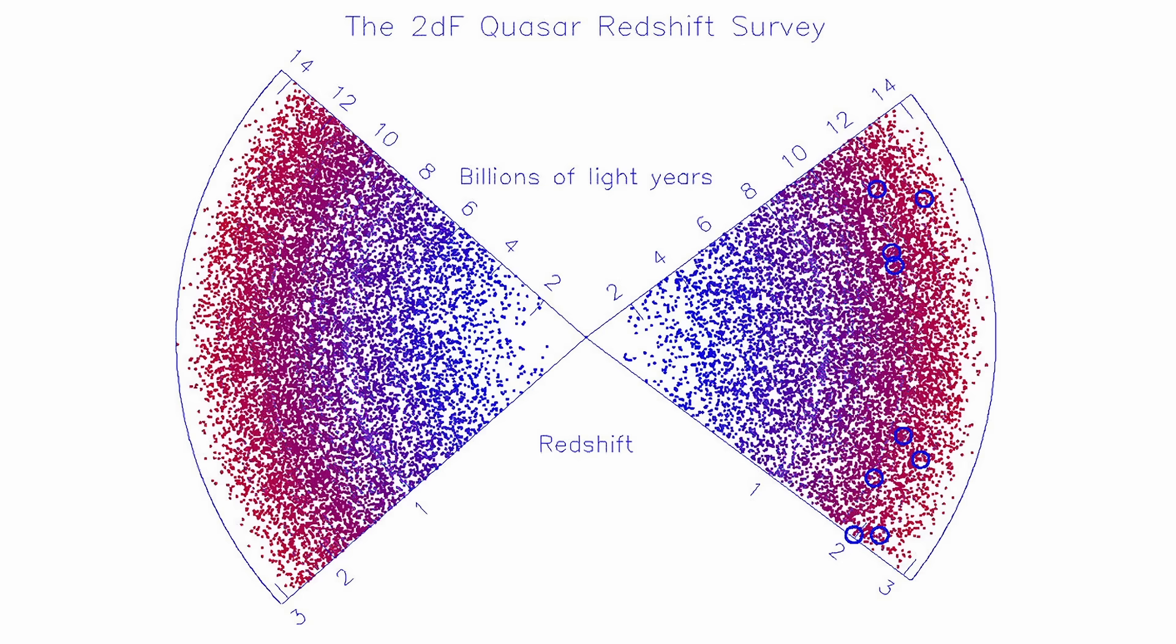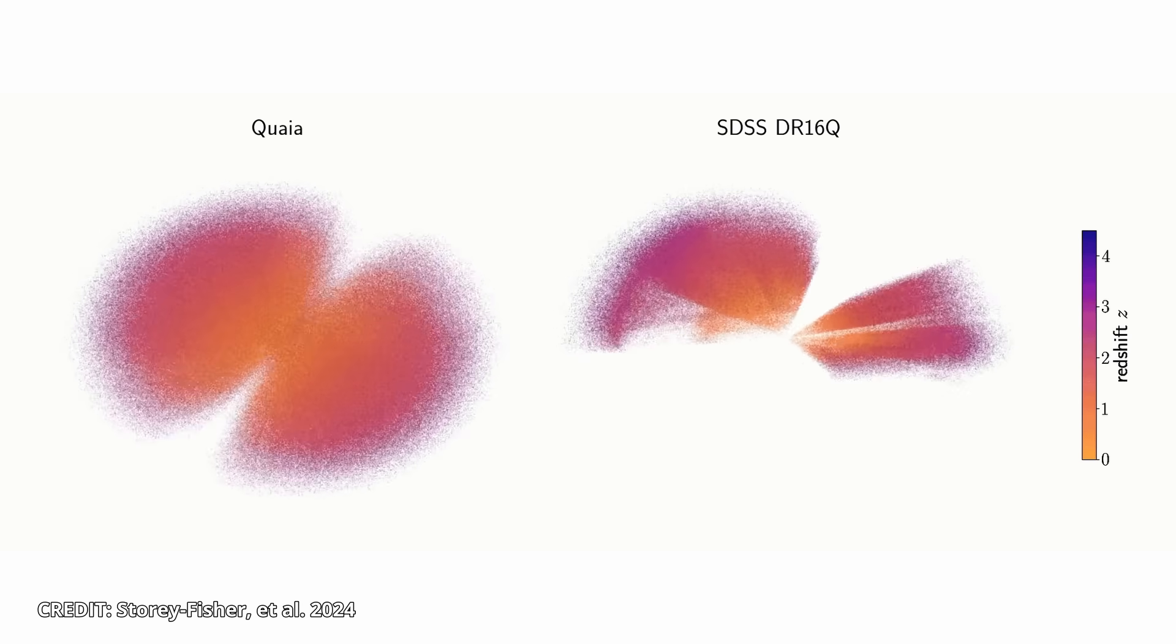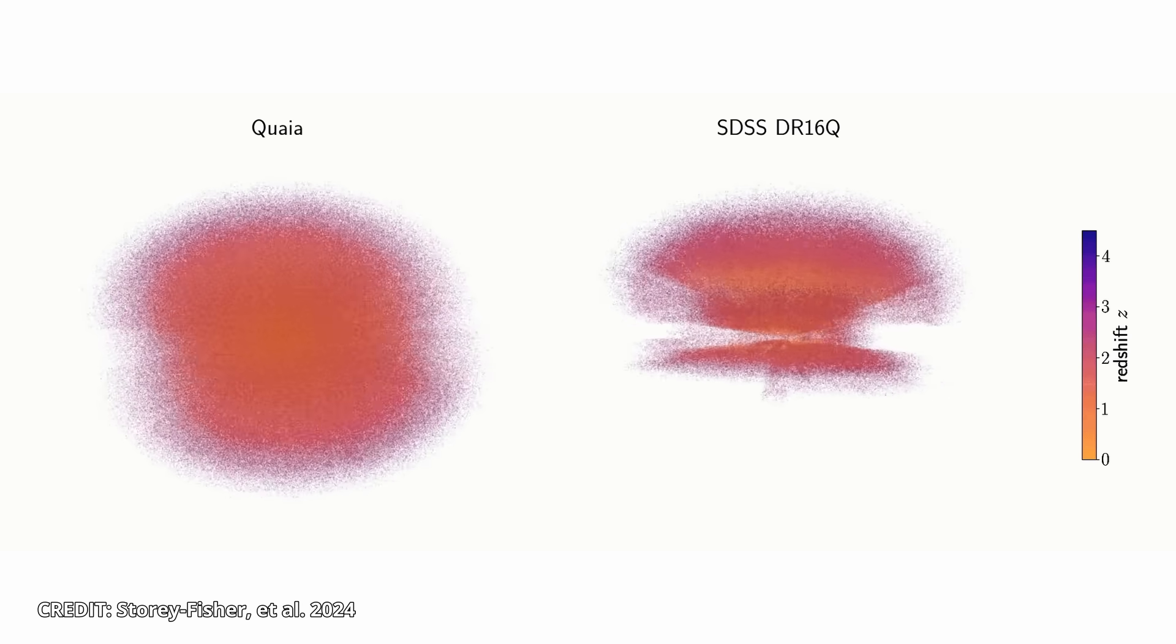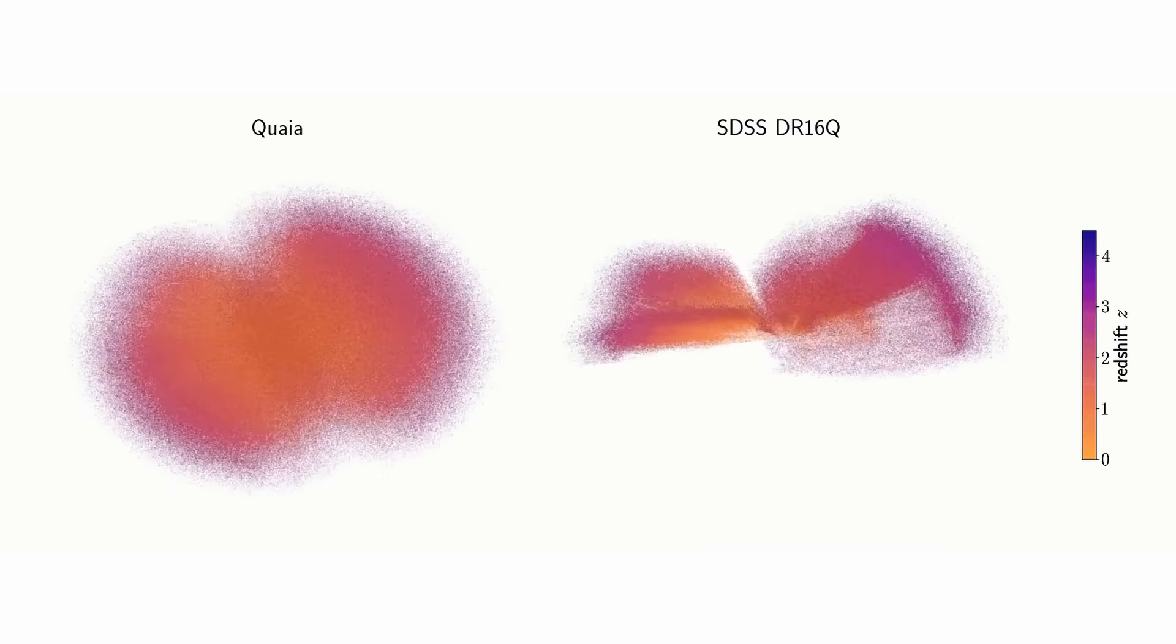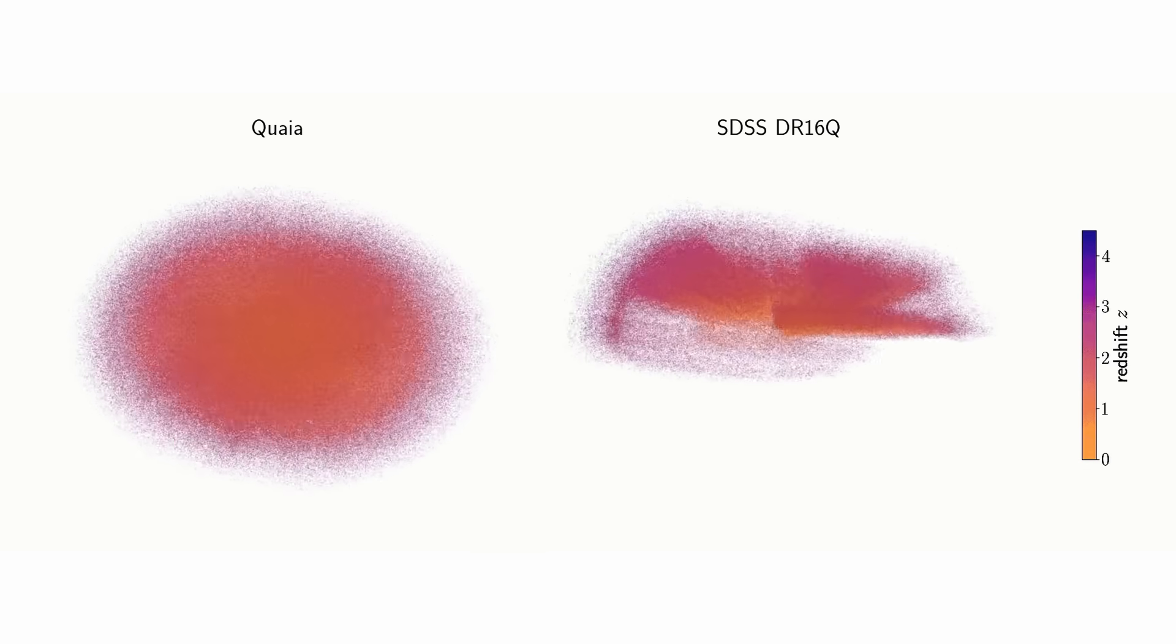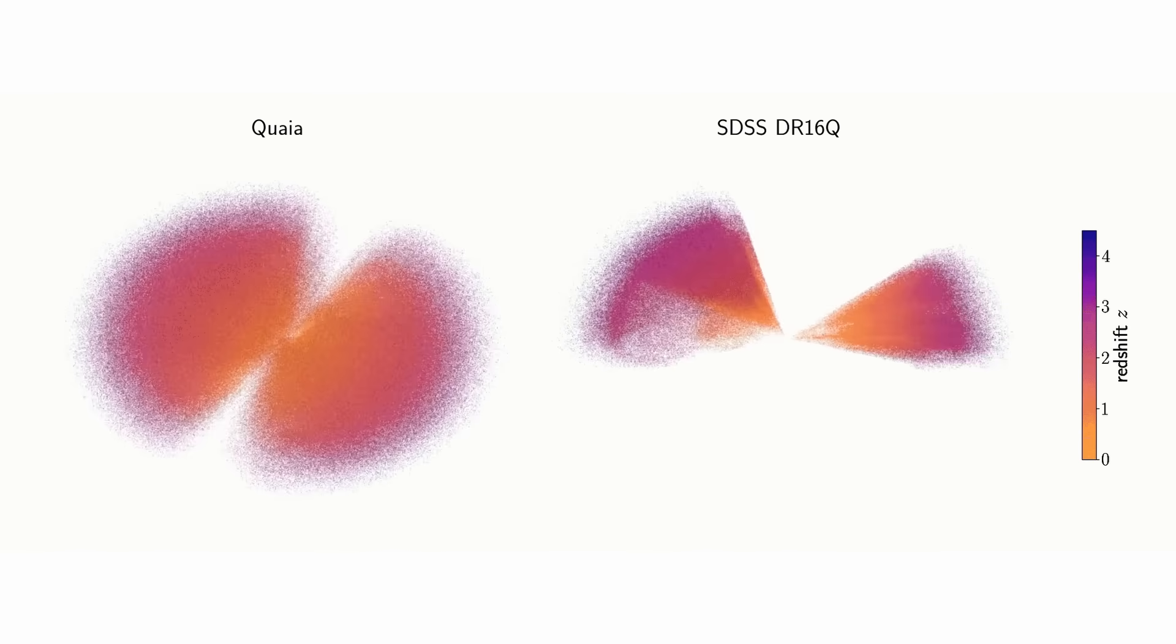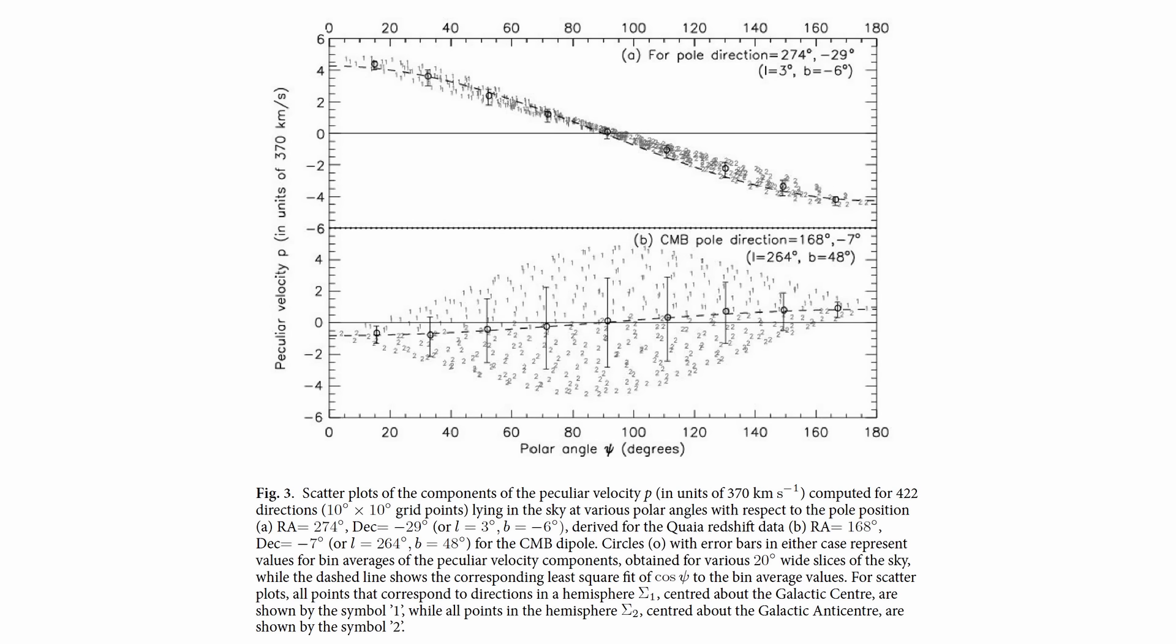Until recently surveys were too small to give a clear answer. However, with the release of the Crea catalogue containing over 1.3 million quasars from Gaia's data, astronomers finally had the scale needed to measure the effect. The result was unambiguous. Quasars do show a dipole.